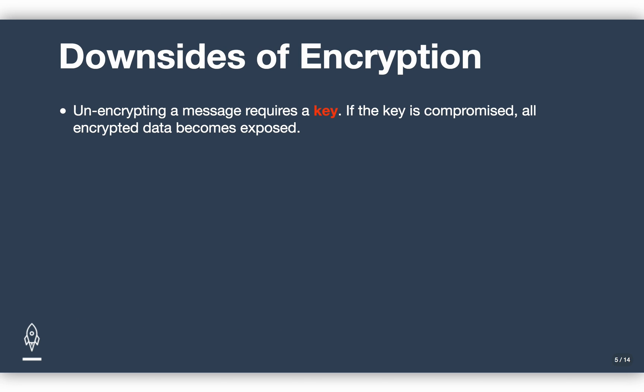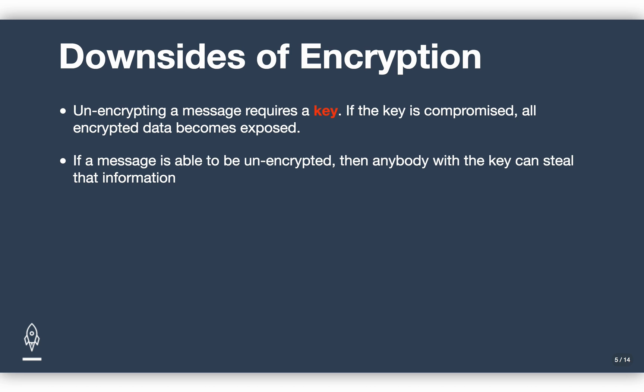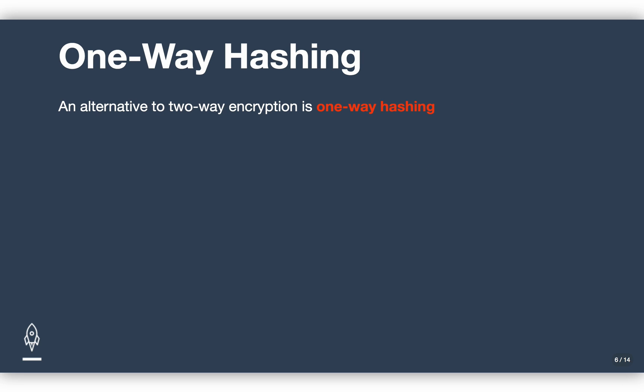Having a key that can decrypt a message adds a layer of vulnerability. If that key is somehow compromised, all of the encrypted data — or any data encrypted by that same algorithm — can be exposed. So that's something we need to look at and try to avoid when dealing with password security. If a message is able to be unencrypted, then anybody with the key can steal that information. The solution in the realm of password security is to use a different approach called one-way hashing.